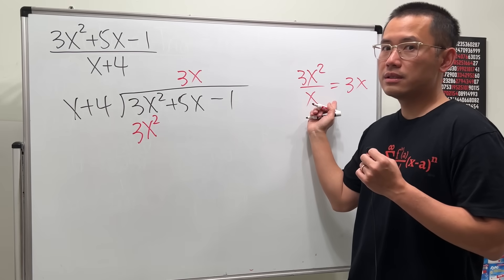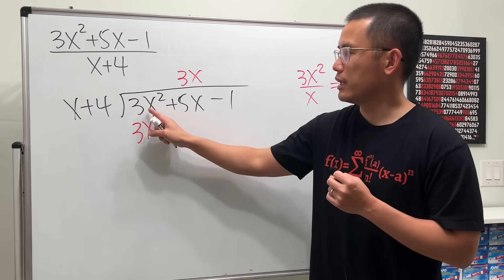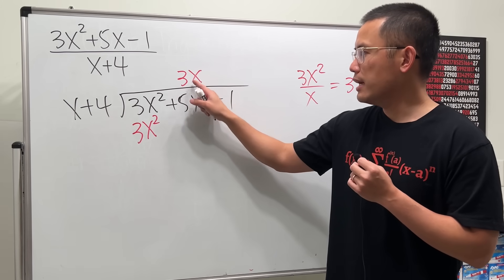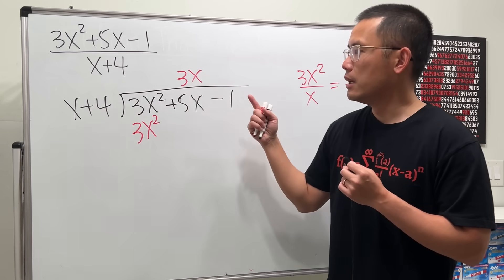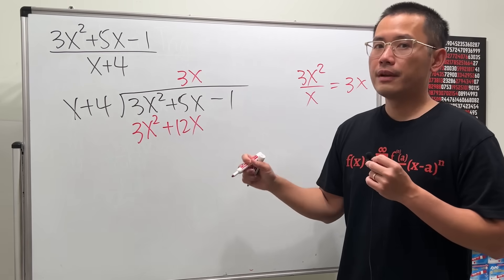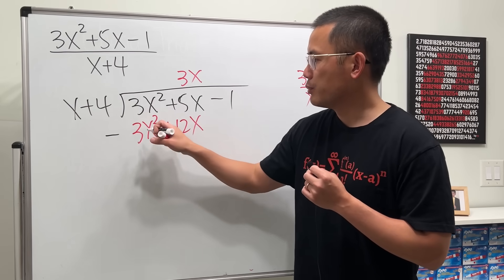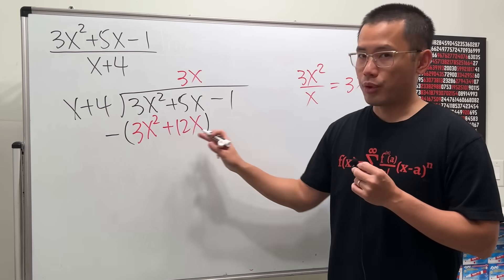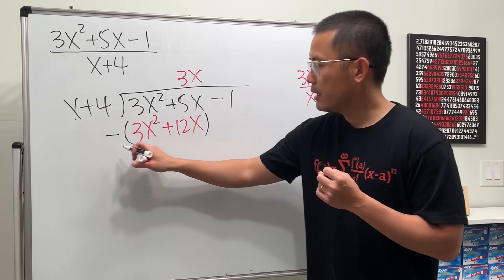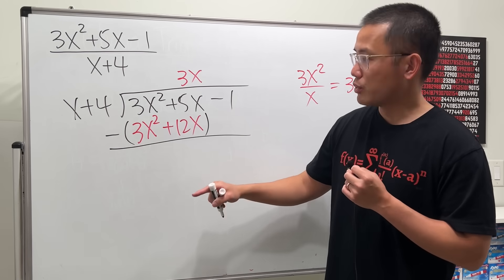We did this because we need to figure out what times x gives us 3x². Then take 3x times 4, which is 12x. For polynomial long division, you always subtract — put a subtraction sign and then parentheses, because you distribute the negative to both terms. So 3x² minus 3x² is 0.